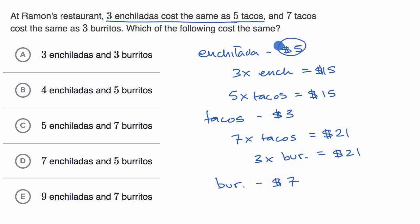So on this tangible example, where an enchilada is $5, I picked this to make things more tangible. If enchiladas are $5, then tacos are $3, and burritos are $7. And so let's see which of these makes sense.